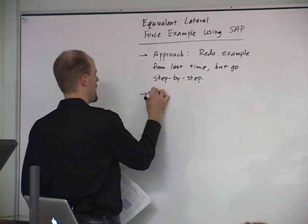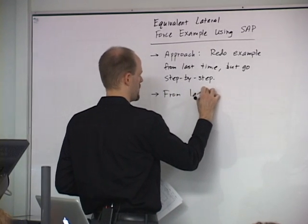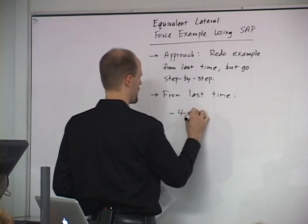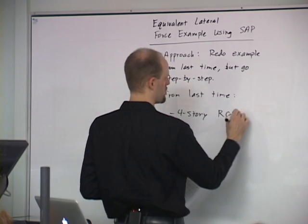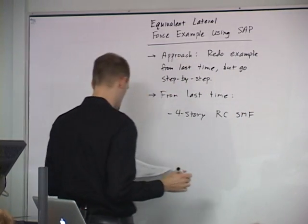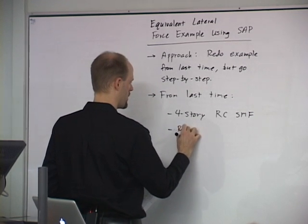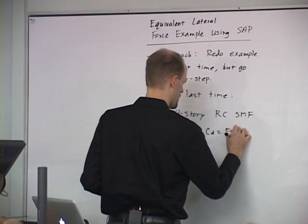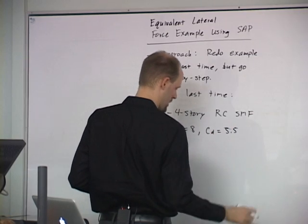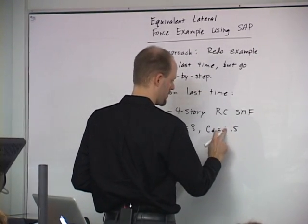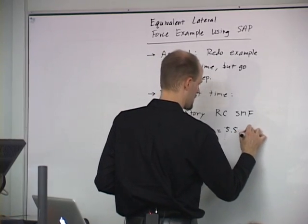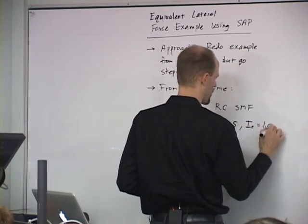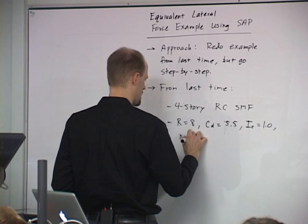So from last time, just so we have some numbers in front of us — we said we're going to use a four-story reinforced concrete special moment frame. So that gives us an R value equals 8. A C sub D value — which we'll figure out in more detail; we use it for drift checks — a C sub D value of 5.5. An importance factor, which in ASCE 7-05 they call it I, in 7-10 they call it I sub E, is 1.0. And we're going to design it to have no irregularities.